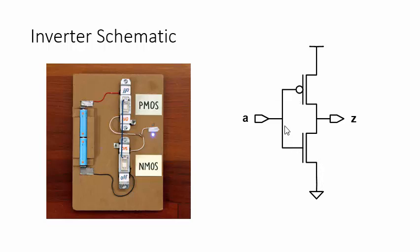and the connected drains are the output. This is the truth table for the logic. The output is the opposite of the input.